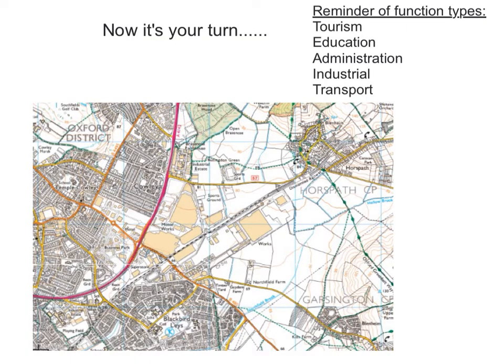Now it's your turn. Have a look at this map. Can you identify any functions? A reminder of what the functions are: tourism, education, admin, industrial, transport, for example.